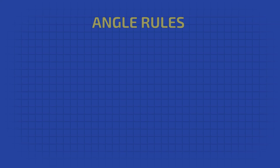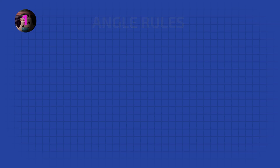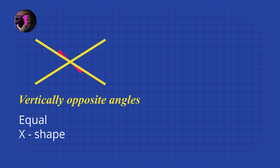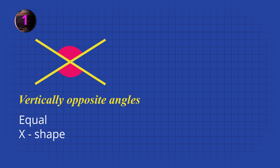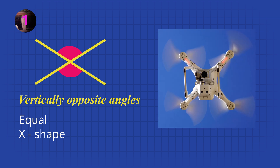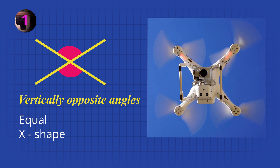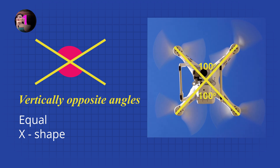Now let's learn the angle rules. Can you see that these angles in this X shape are the same size? These are called vertically opposite angles because they are opposite each other in a vertical direction. In this drone example the vertically opposite angles are equal.